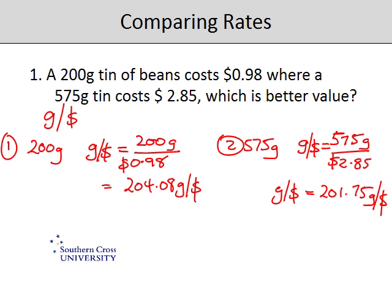The better value is going to be the one that gives you more quantity for your dollar. So the 200 gram tin is the best value.